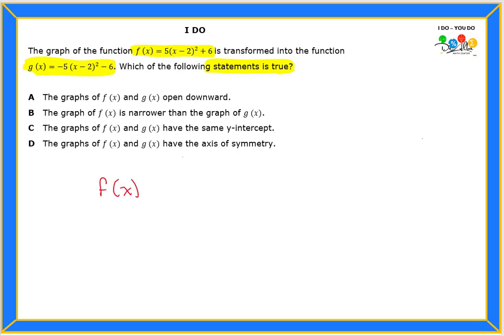So f(x) equals 5(x-2)² + 6, and I'm going to write the second one here. What's the first thing we notice about these two functions?